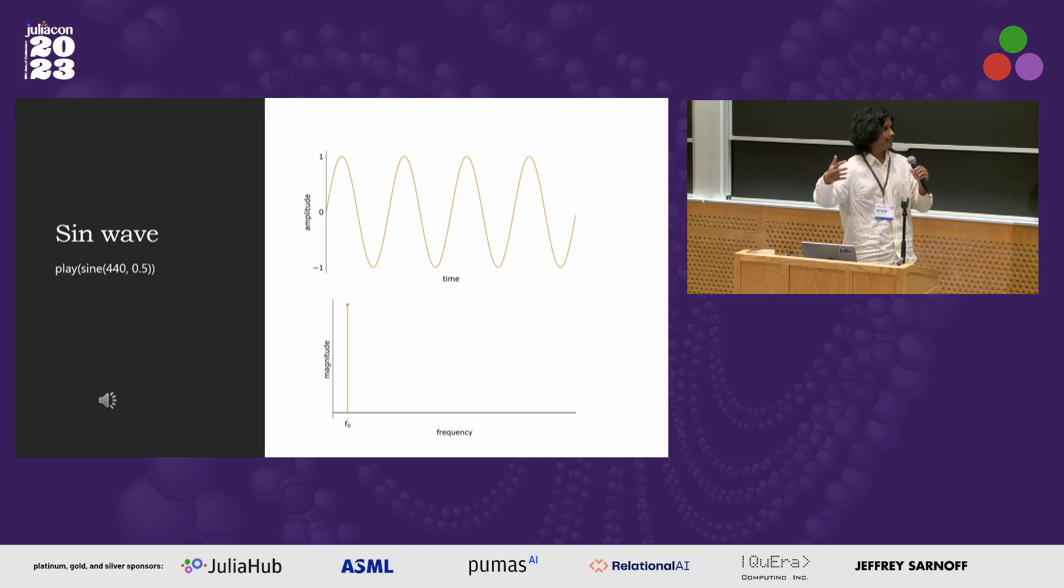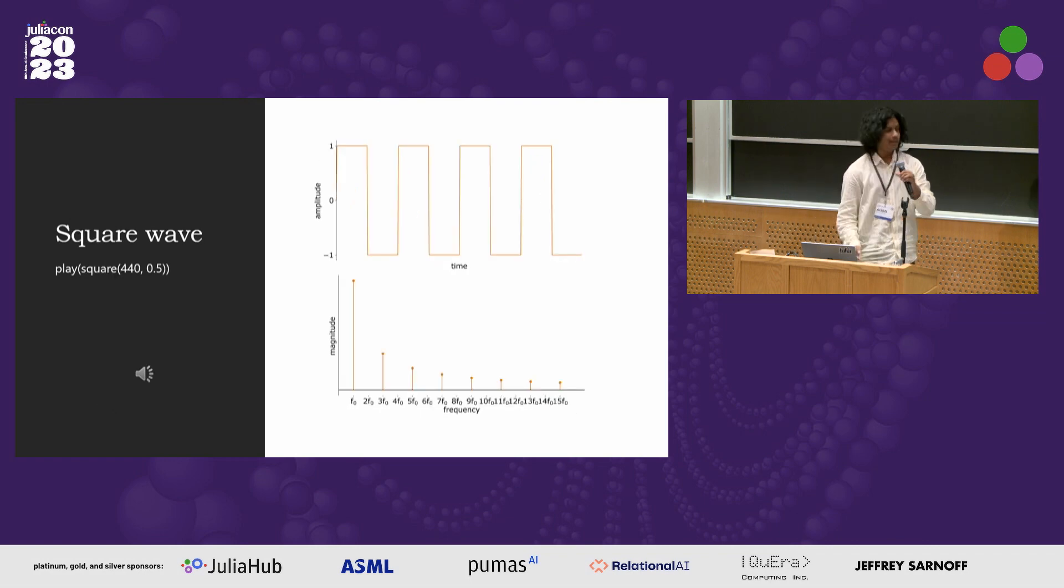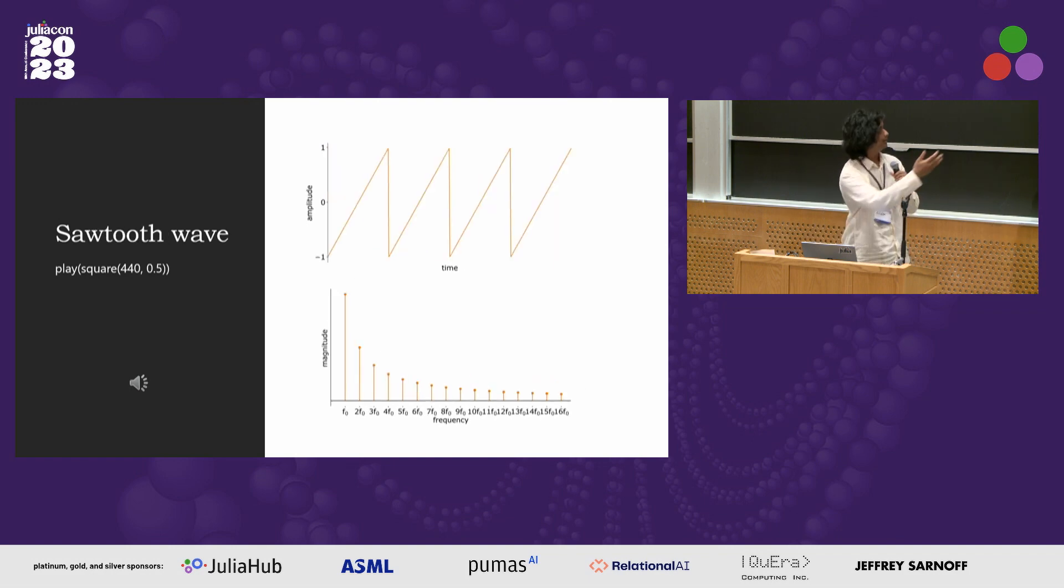So to increase our sonic palette, what we do is we take harmonics of the root fundamental. So for a square wave, this is a square wave, it sounds like nothing. If we take every odd harmonic, so first the fundamental, third, fifth, and so on, in a reciprocal pattern, you get a square shape. And then for a sawtooth wave, you get every harmonic in an inverse pattern.